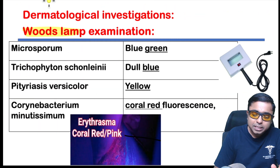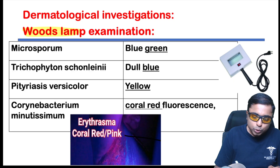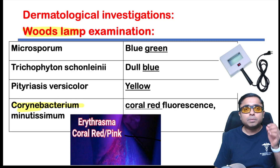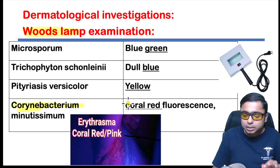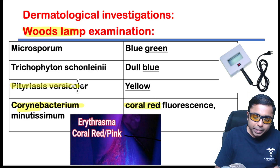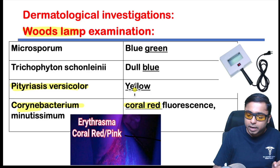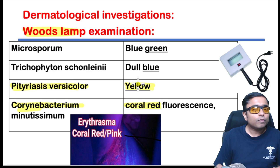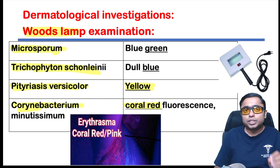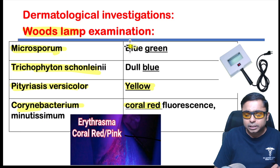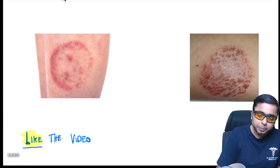Next are Wood lamp examination findings. Remember: Corynebacterium minutissimum is associated with erythrasma and shows coral red fluorescence. Pityriasis versicolor due to Malassezia globosa and furfur shows yellow fluorescence. Tinea capitis-producing fungi are associated mainly with blue fluorescence.